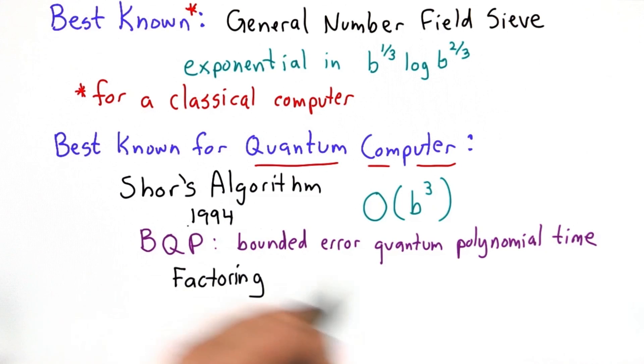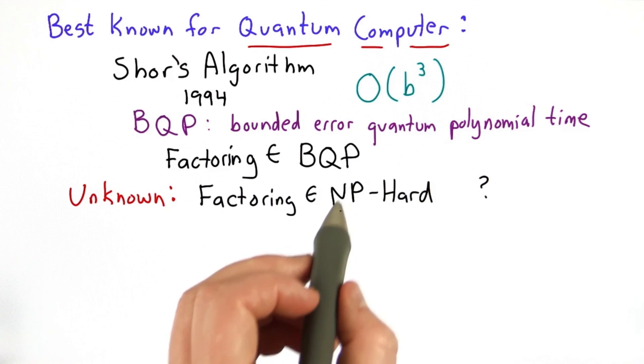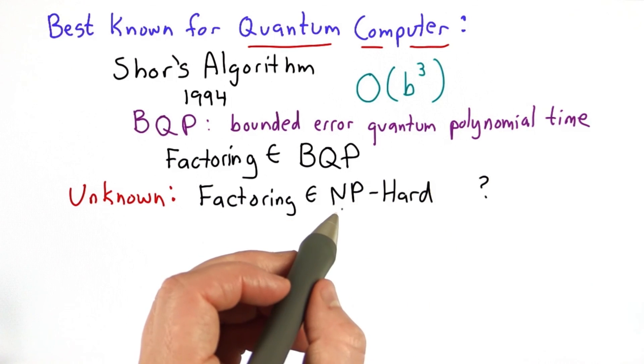So this means that factoring is in a complexity class called bounded error quantum polynomial time, known as BQP. What's unknown is whether factoring is in the class NP-hard, which are the hardest problems that can be solved by a non-deterministic Turing machine in polynomial time.